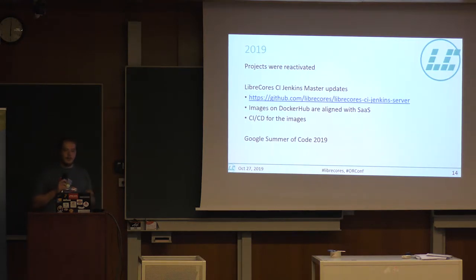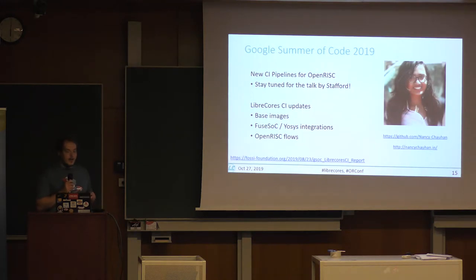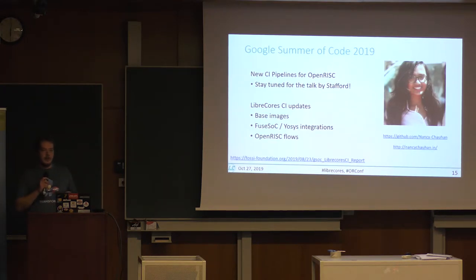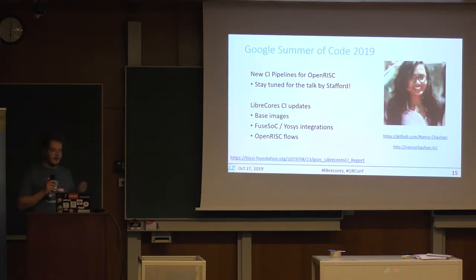The more interesting part came from Google Summer of Code itself. This summer we had one student, Nancy Chohan. We were working with her together with Stafford Horne. The idea was to use LibreCourse CI to provide better CI/CD pipelines for open risk projects, specifically for Mor1k and Marachina. This was the main focus, but it also led to multiple updates within the LibreCourse CI infrastructure.